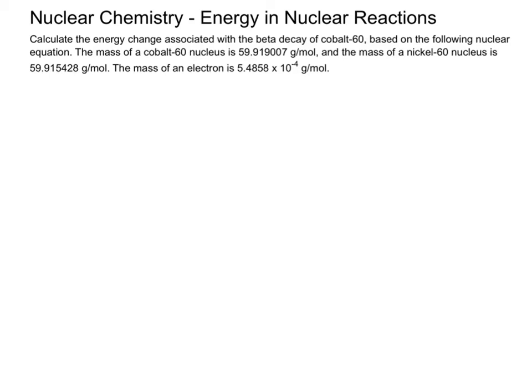Now, why would I give you the mass of an electron in this case? What kind of decay is it? A beta particle is essentially an electron. So, based on that equation, you need to calculate the mass change, products minus reactants, and then calculate the energy change.